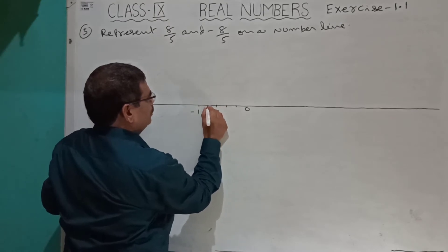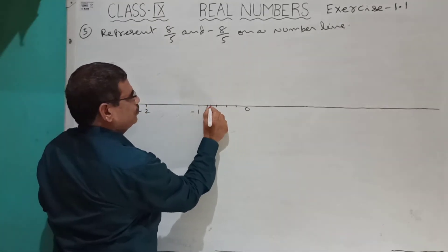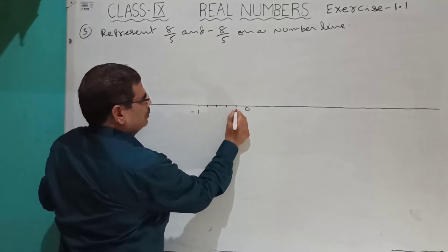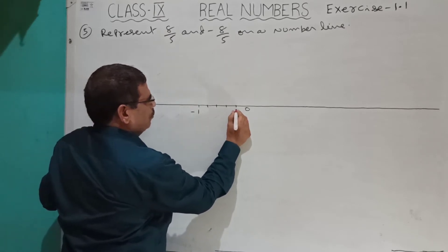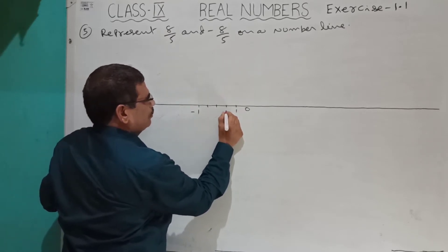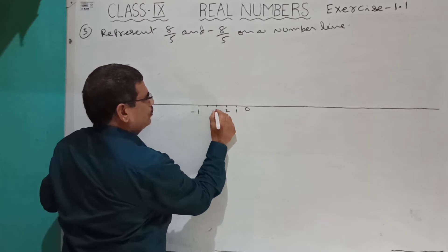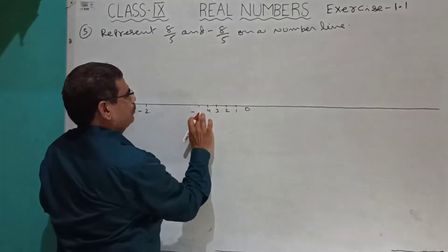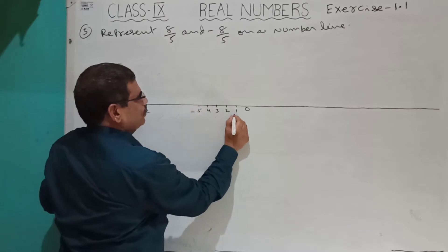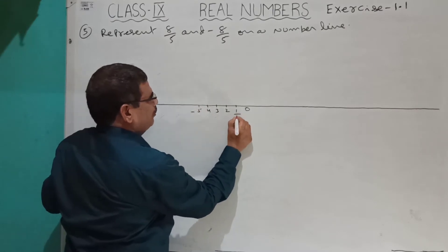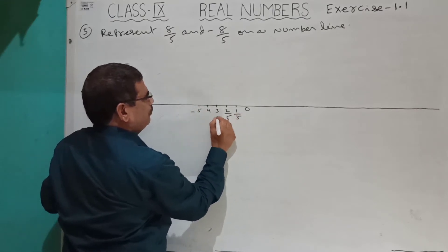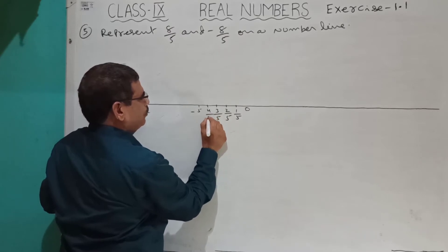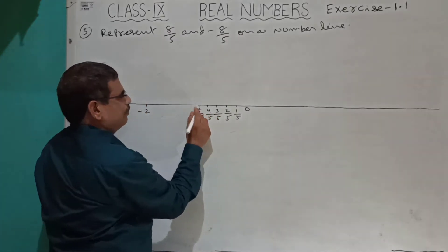Dividing each unit into 5 equal parts, we label them 1, 2, 3, 4, 5 on the positive side. These correspond to 1 by 5, 2 by 5, 3 by 5, 4 by 5, and 5 by 5.